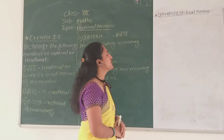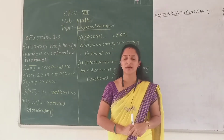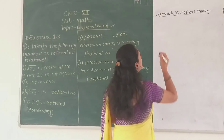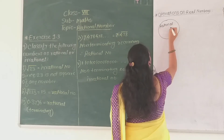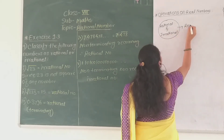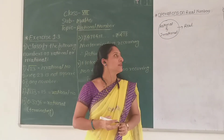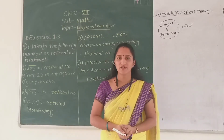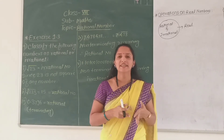Now our next topic is operations on real numbers. Real numbers is a group of rational numbers and irrational numbers. In your previous standards, you learned some properties of rational numbers — closure property, commutative property, associative property, and distributivity.